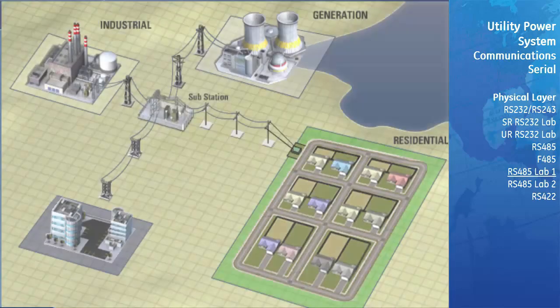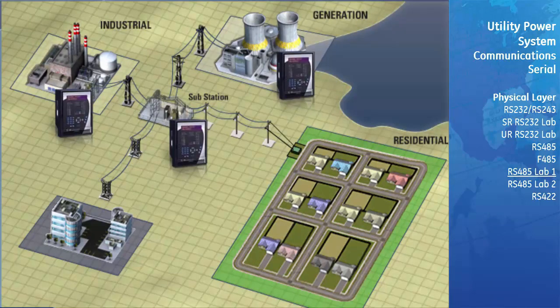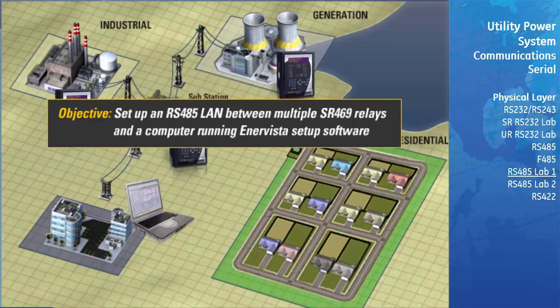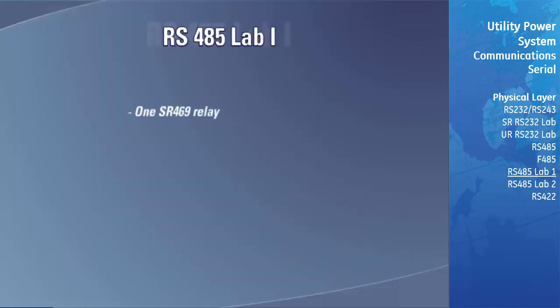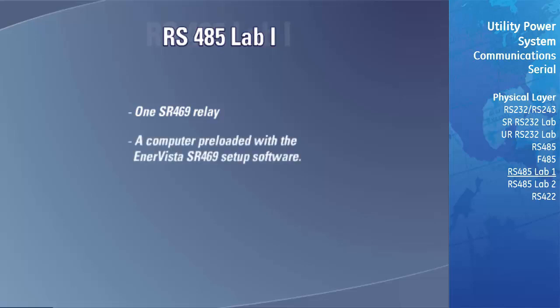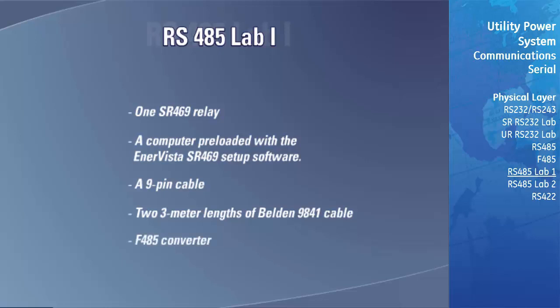A common requirement is to set up a network so that multiple GE Multilin relays can be monitored from one location. The objective of this lab is to demonstrate how to set up an RS-485 LAN between multiple GE Multilin SR-469 relays and a computer running GE Multilin's EnerVista setup software. The equipment required includes at least one SR-469 relay — we'll use two — a computer preloaded with the EnerVista SR-469 setup software, a 9-pin cable, two 3-meter lengths of Belden 9841 cable, and a GE Multilin F485 converter to interface the computer's RS-232 port with the RS-485 LAN.